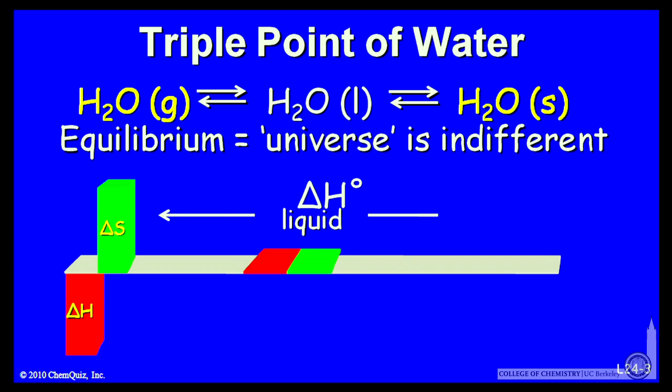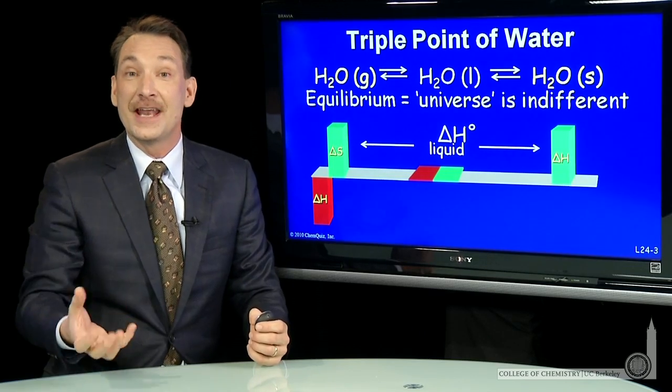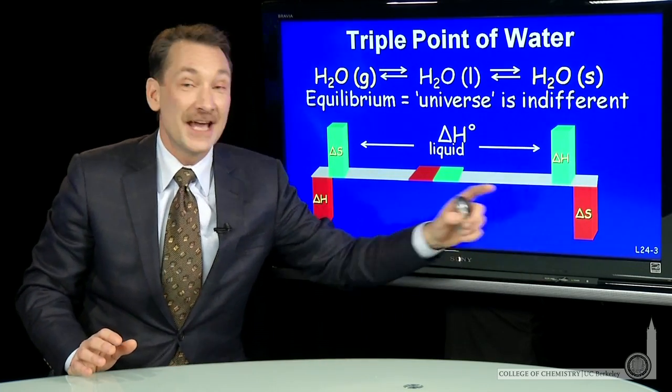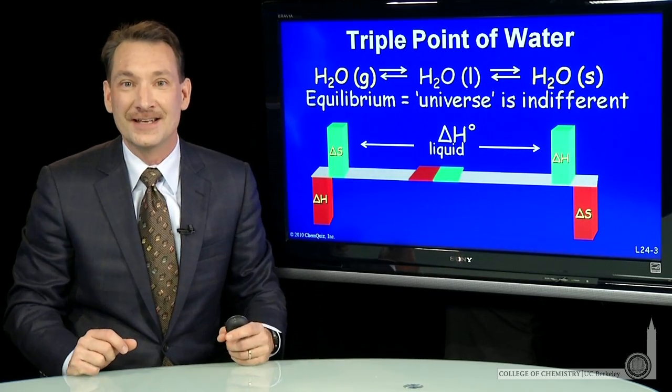And as you go from liquid to solid, same thing. When I go from liquid to solid, I release some energy. That increases the entropy of the surroundings at the same time the entropy of the system is decreasing, going to the more constrained solid.